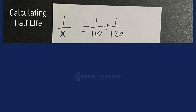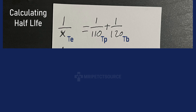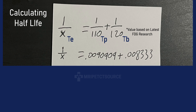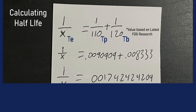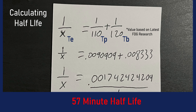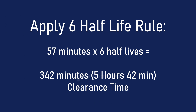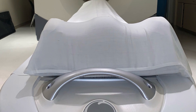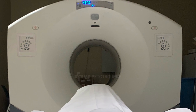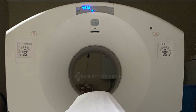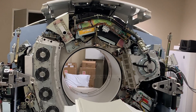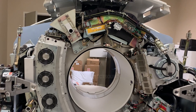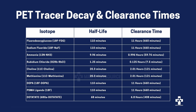For instance, if we assume a T sub B of 120 minutes, the calculated effective half-life comes out to around 57 minutes, meaning the radiation would fall to negligible levels in just under six hours. But in clinical practice, especially when dealing with trapped tracers, it's considered safer and more conservative to assume T sub E is roughly equal to T sub P and to apply the six half-life rule based on that.